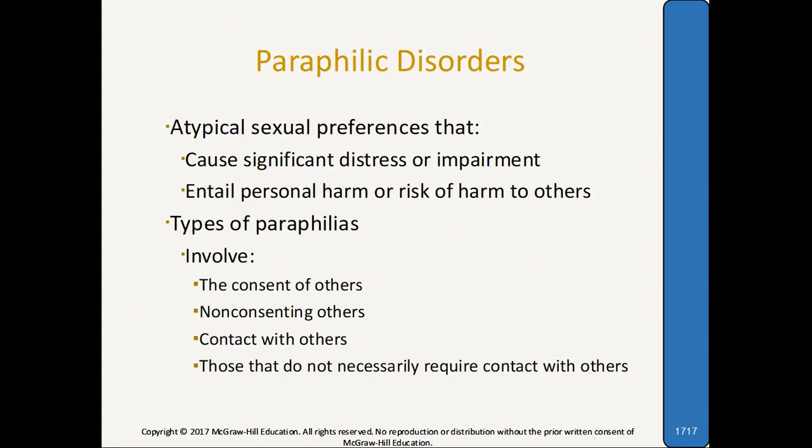There are several paraphilic disorders outlined in DSM-5. All paraphilic disorders are considered atypical sexual preferences that not only cause significant distress and impairment, but also entail personal harm or risk to others. There are different types of paraphilias — they can involve the consent of others, non-consenting others, contact with others, or those that don't necessarily require contact with others.